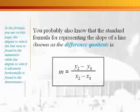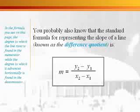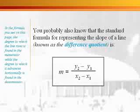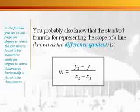In the formula you see here, the degree to which the line rises is found in the numerator while the degree to which it advances horizontally is found in the denominator.